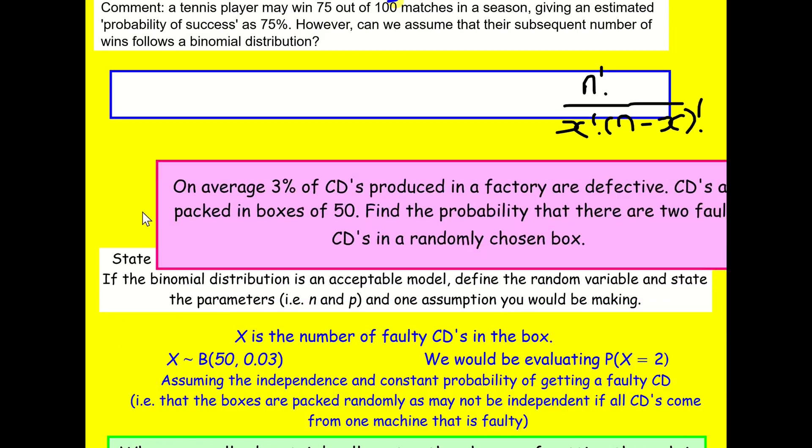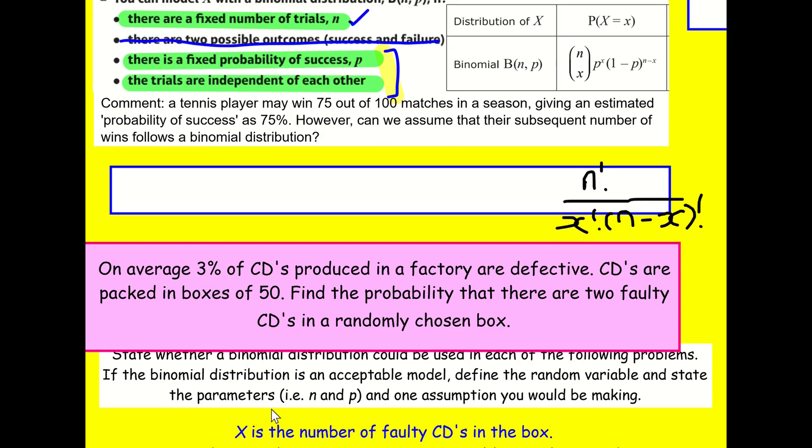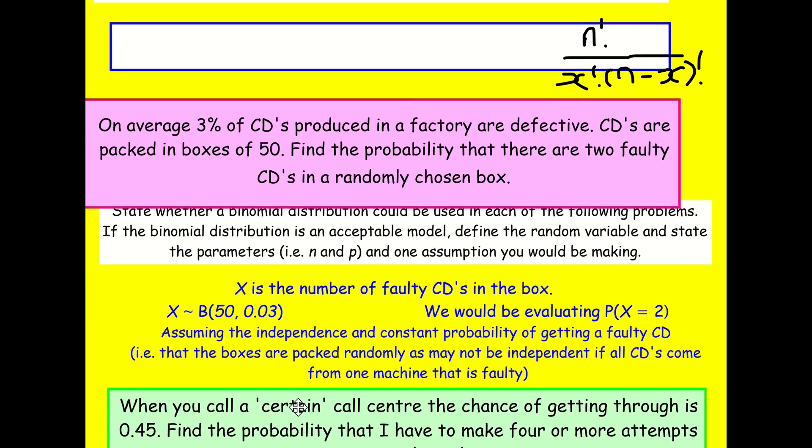This one here. Is this binomial or not? Well, this is what I wrote for the answer. X is the number of faulty CDs in the box. That's what we're interested in. And I think this can be modeled with a binomial distribution. 50 trials, a 3% or 0.03 chance of success of them being defective. And we would be finding the probability that x equals 2. So we have to assume that independence and constant probability of getting a faulty CD, that getting one will not affect the next one, i.e. that the boxes are packed randomly as they may not be independent if all CDs come from one machine that's faulty. So I'm giving context here. That is really important. You can't just say there's a fixed probability of success. You need to try and link it to the actual problem.